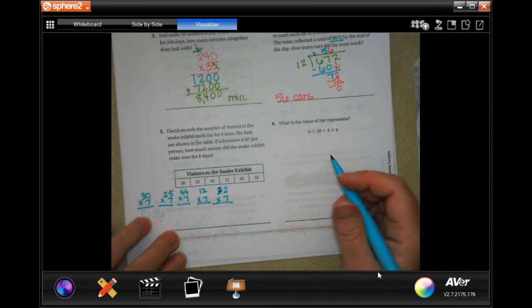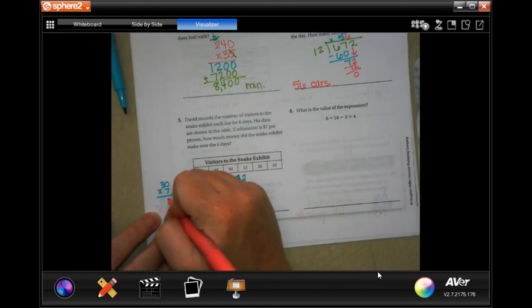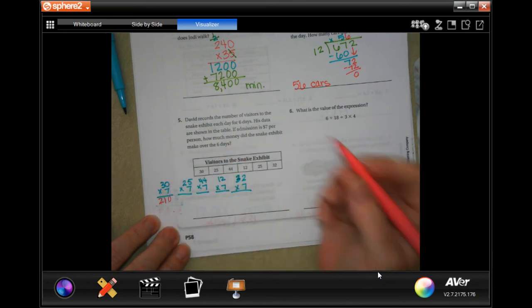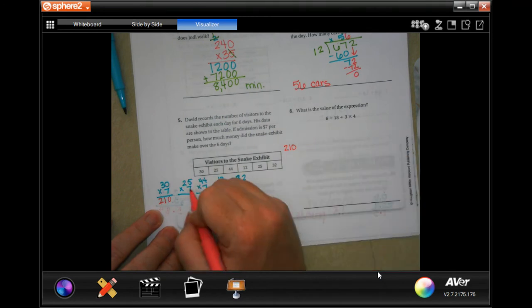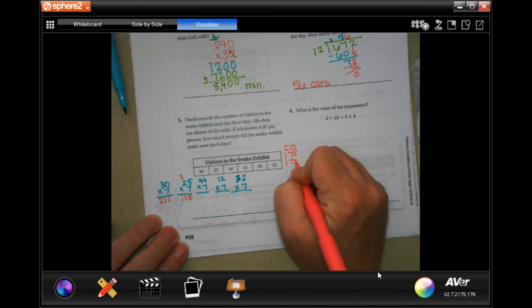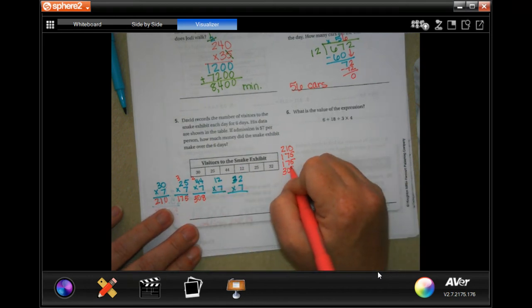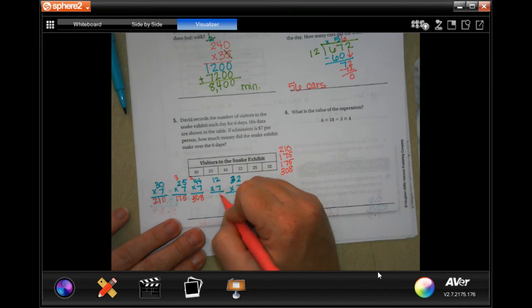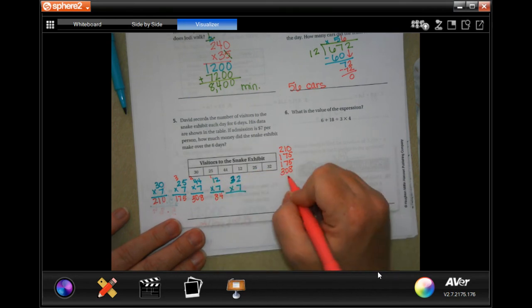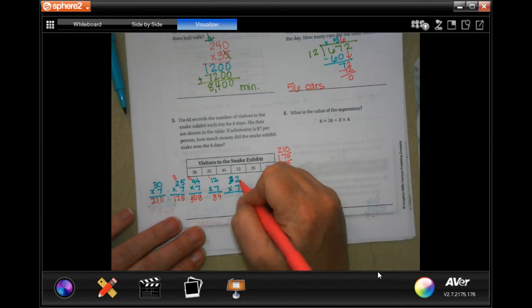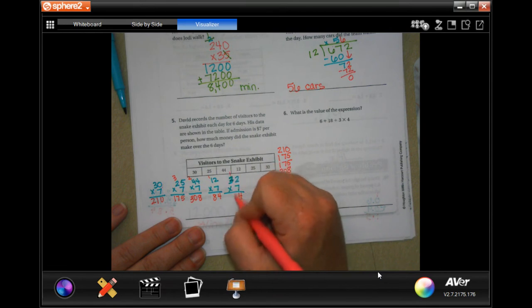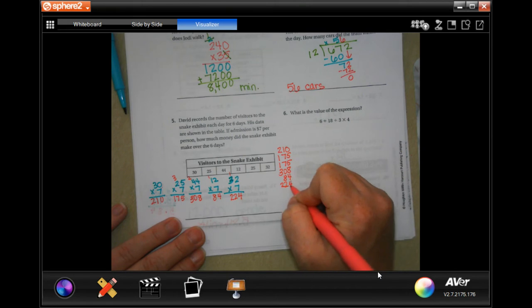So we have seven times zero is zero, and seven times three is 21. So I'm going to write 210. Seven times five is 35. Carry the three. Seven times two is 14, plus three more is 17. 175. Now that's the one that I need to do twice. Seven times four is 28. Carry the two. Seven times four is 28 again, plus three more is 30. 308. Now seven times two is 14. Carry the one. Seven times one is 7, plus one is 8. 84. Seven times two is 14. Carry the one. Seven times three is 21, plus one is 22. 224.